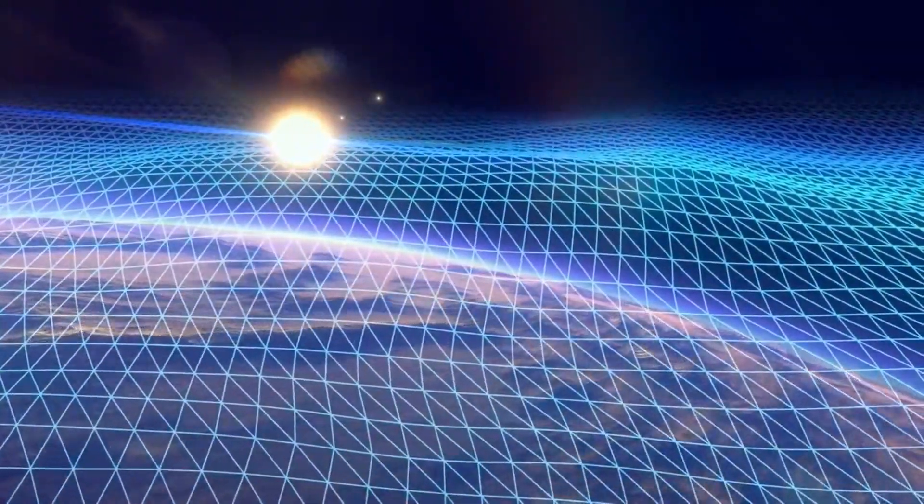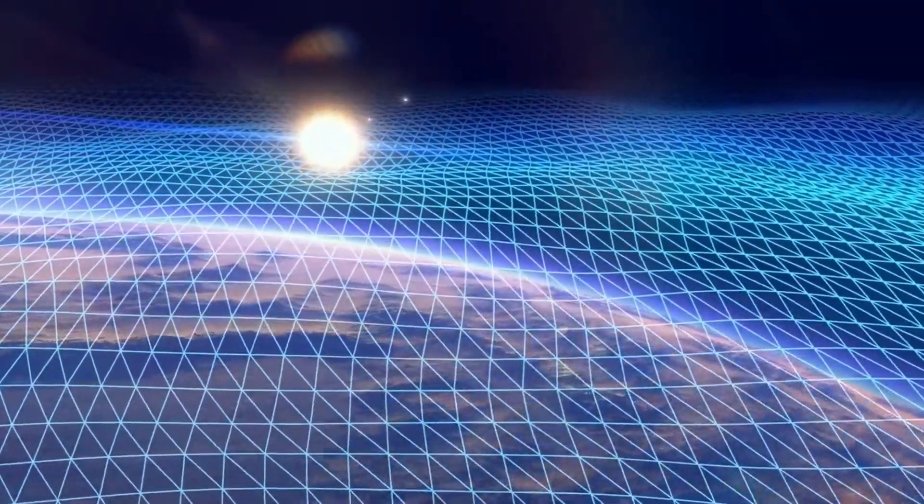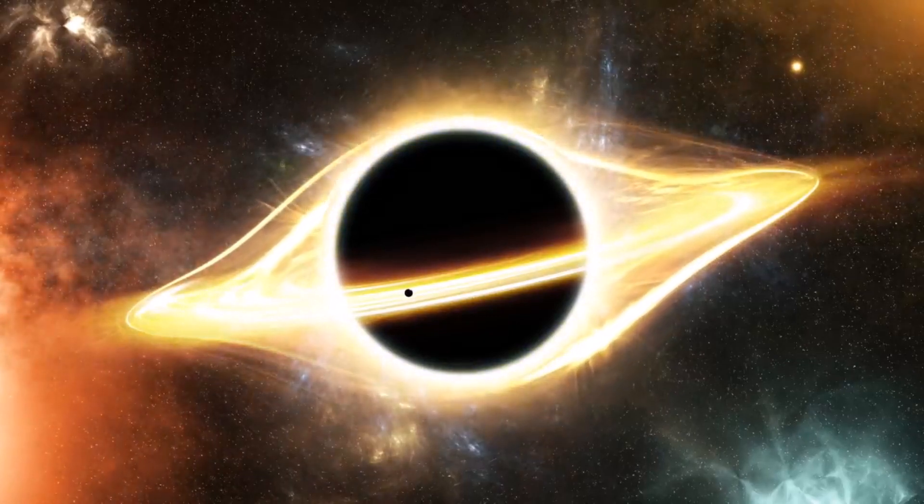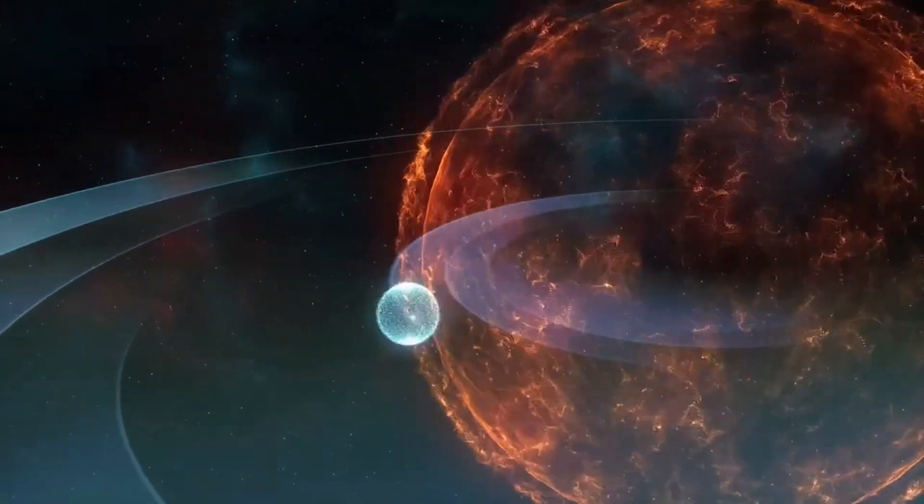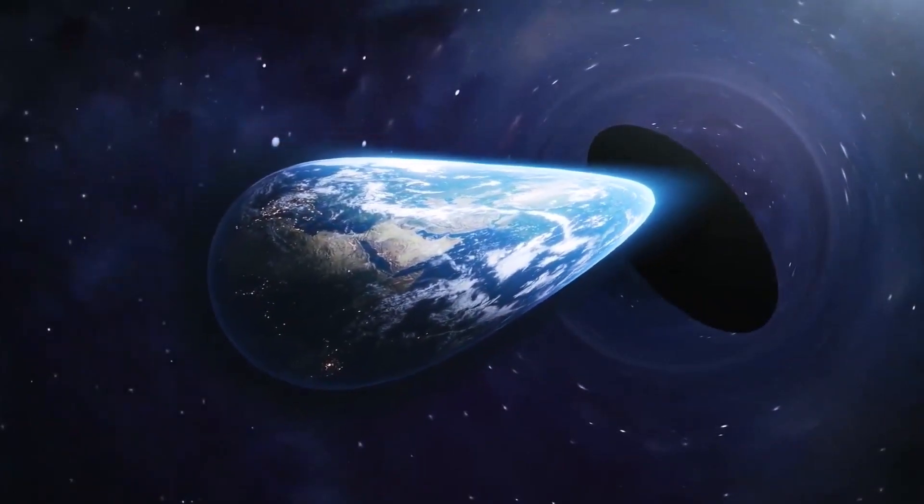The fact is, gravitational pull reduces significantly as you move away from a black hole. So, for instance, if somehow we were able to replace our sun with a black hole of the same mass, the Earth would not be pulled in.